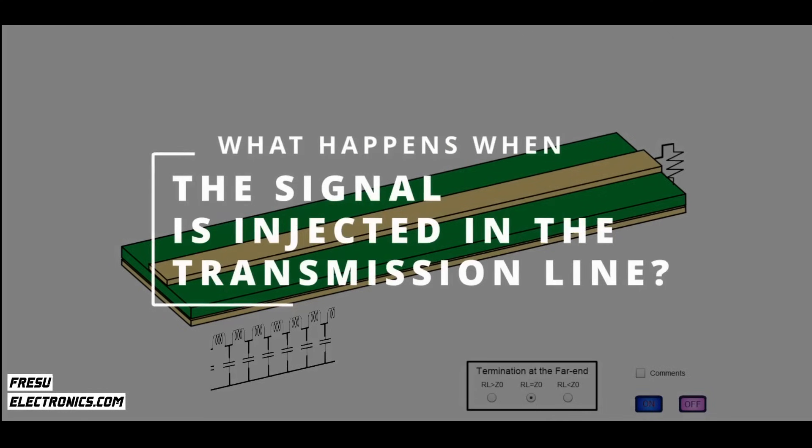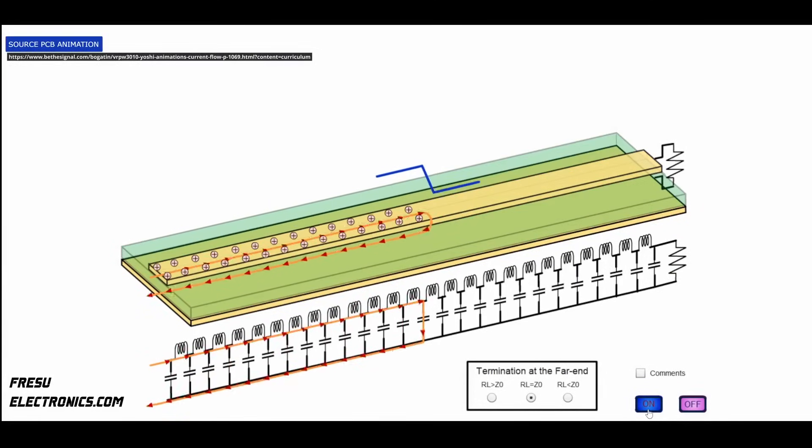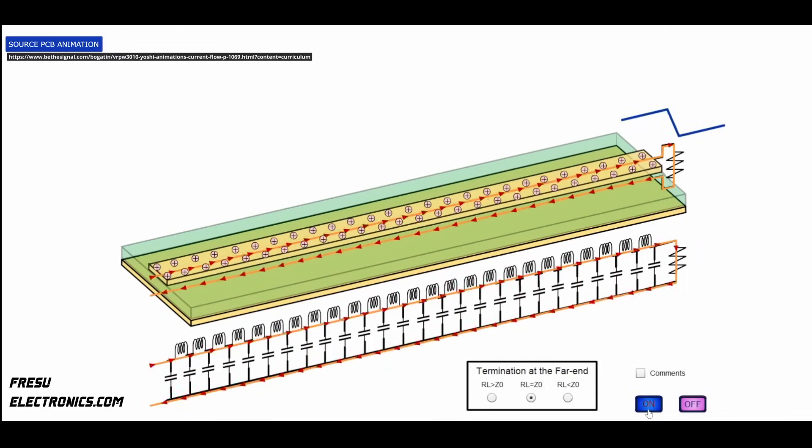Now, what happens when a signal is injected into the transmission line? The propagating signal, especially at the edge, where the electric field shifts from low to high, creates a displacement current, forming a current wave front.